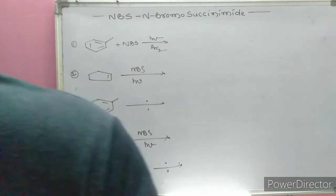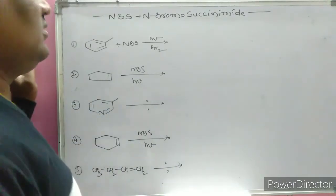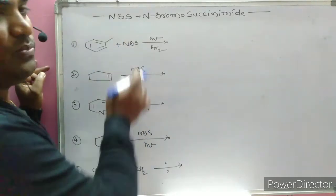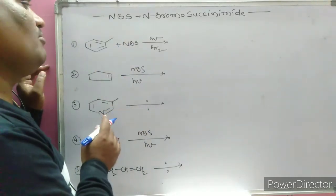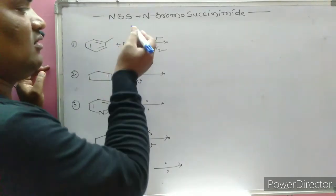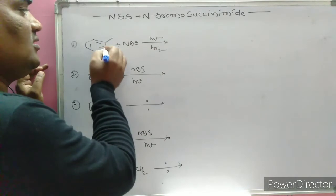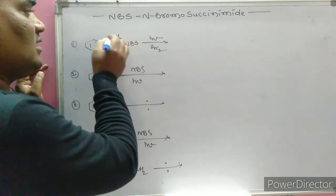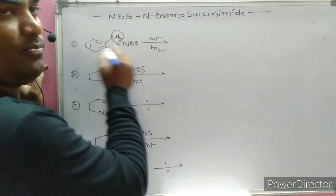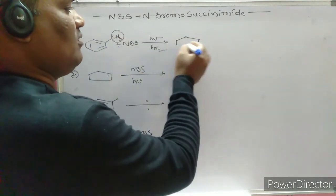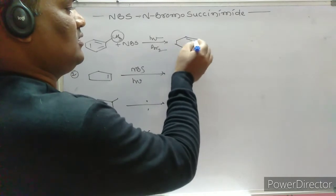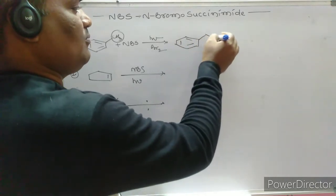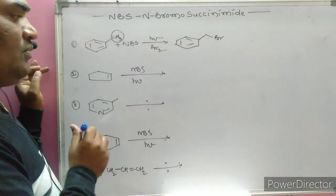To write products directly within seconds using NBS: if a benzene ring is present with a CH3 group, that is the benzylic position. The bromine is substituted at that benzylic position to give the product.